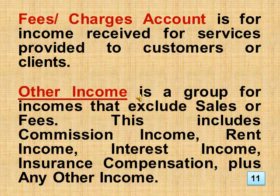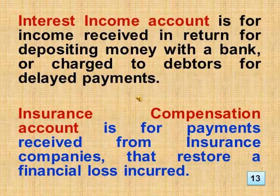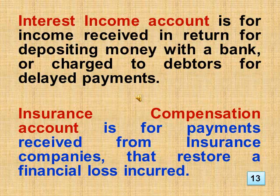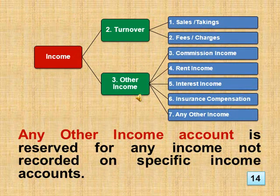The fees and charges account is for income received for services provided to customers or clients. Other Income includes commission income, rent income, interest income, and insurance compensation. Commission income account is for income received in return for a service done for other people or businesses — for example, a commission on the sale of lottery tickets. Rent income account is for income received from renting part of business premises. Interest income account is for income received in return for depositing money with a bank, or charged to debtors for delayed payments. Insurance compensation account is for payments received from insurance companies that restore a financial loss incurred. Any other income account is reserved for any income not recorded on specific income accounts.